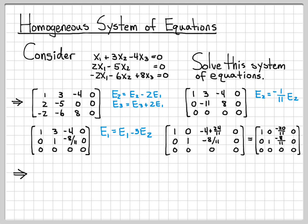If I look at this now, I can see some interesting things. I see that the variables x1 and x2 are basic variables because there's a pivot in the first column and a pivot in the second column. That makes x3 a free variable.